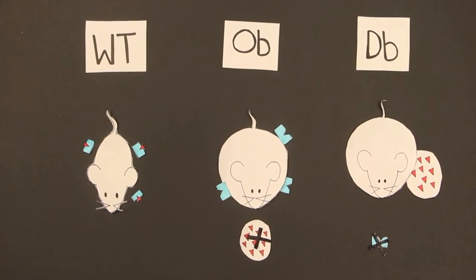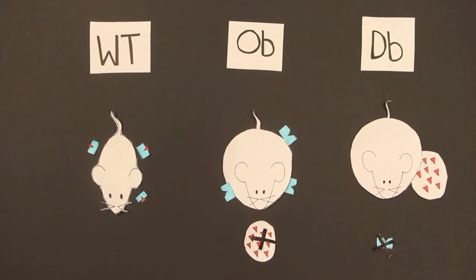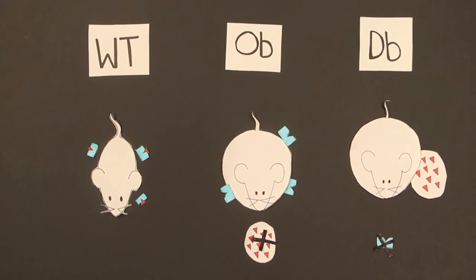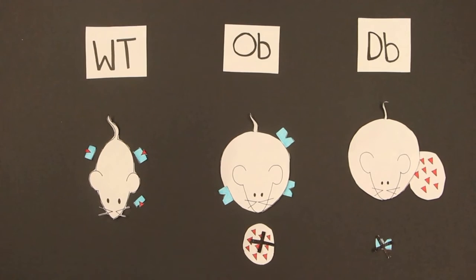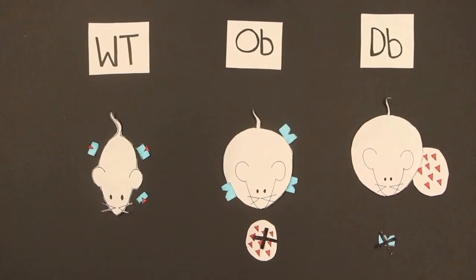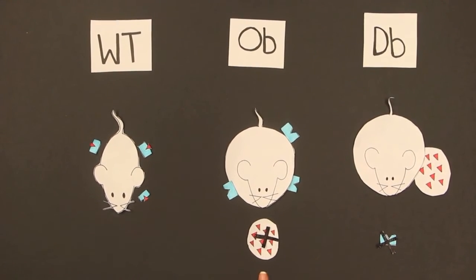In this experiment, we explored two mutations that interrupt a ligand receptor interaction. It is a negative feedback signal because it suppresses eating drive. The OB mouse did not produce the ligand while the DB mouse did not produce receptors.